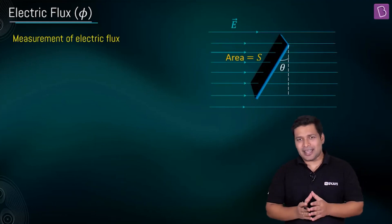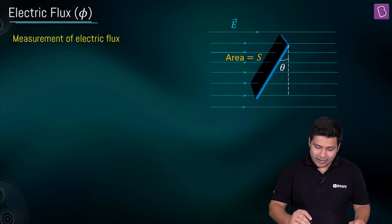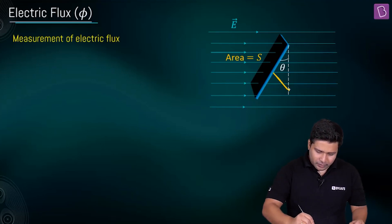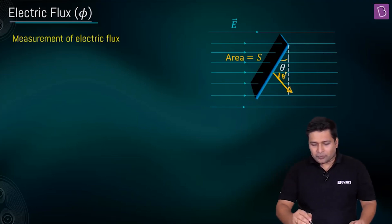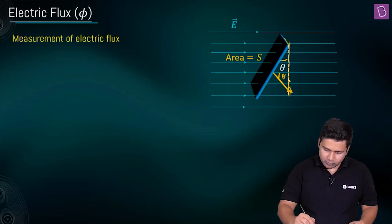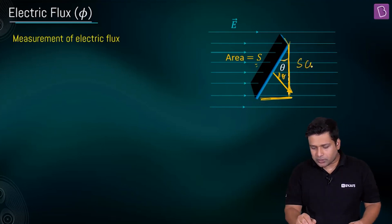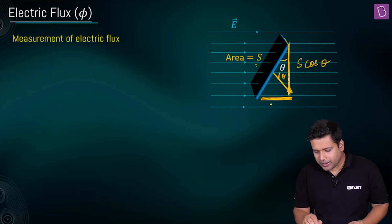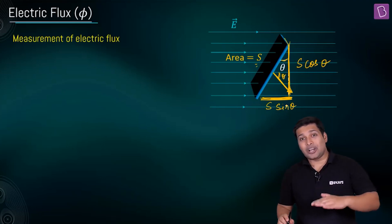Suppose the area is not normal to the direction of the electric field — instead, the area vector subtends some angle theta with it. Drawing the area vector perpendicular to the surface, if this angle is theta, we can break down the area into two components: one along the direction of the electric field (S cosθ) and one parallel to the electric field (S sinθ).